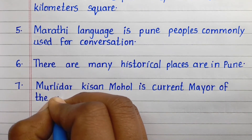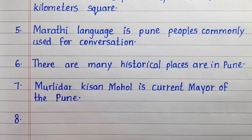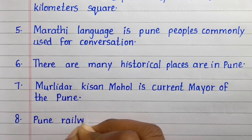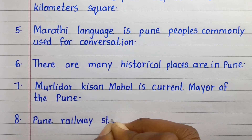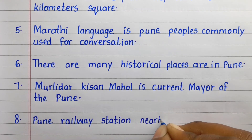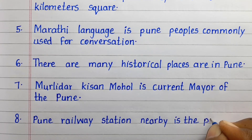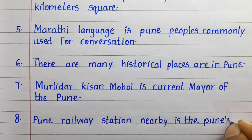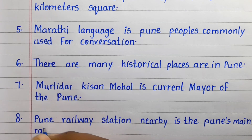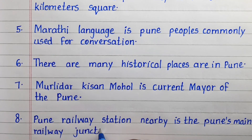Seventh line: Murili Dharkisan Mohol is the current mayor of Pune. Eighth line: Pune railway station is Pune's main railway junction.